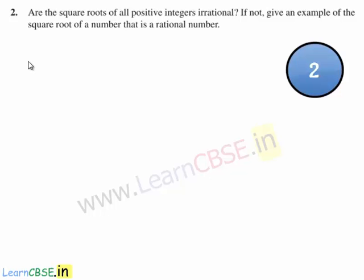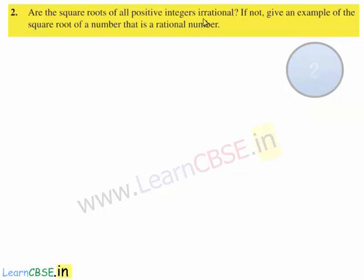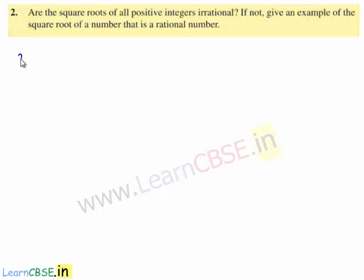Now let us move on to the second question. The second question is: are the square roots of all positive integers irrational? If not, give an example of the square root of a number that is a rational number. Let us move on to the solution.